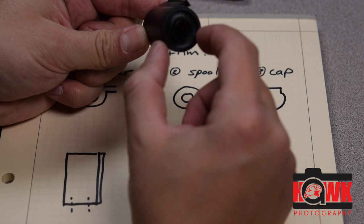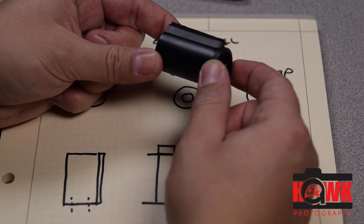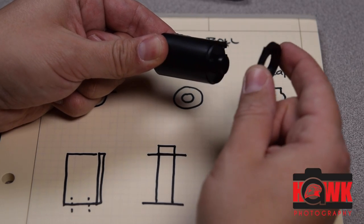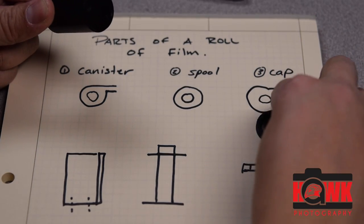And so this is the type with a quarter turn lid. So I'm going to spin this a quarter turn and I can remove it. I'll set the cap there.